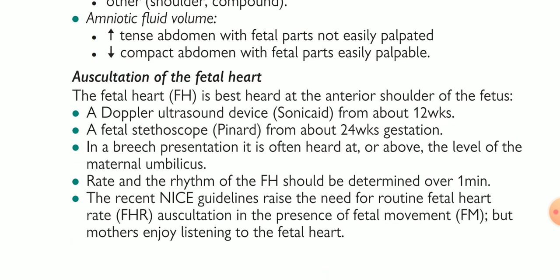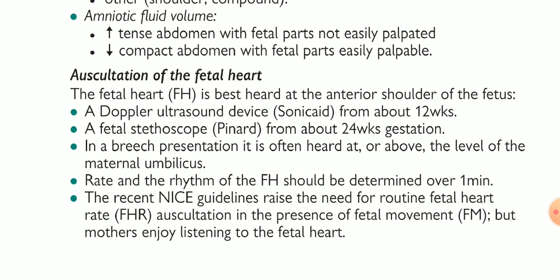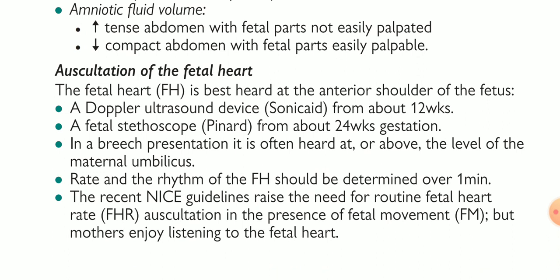For auscultation of the fetal heart, we can hear the fetal heart from six weeks after the last menstrual period using different methods. The normal fetal heart rate range is 110 to 160 beats per minute. It can be accelerated or decelerated — these variations will be discussed in another lecture. The fetal heart is best heard at the anterior shoulder of the fetus. The fetal stethoscope is used to identify and auscultate the fetal heart rate, and the anterior shoulder is the best point to hear it.